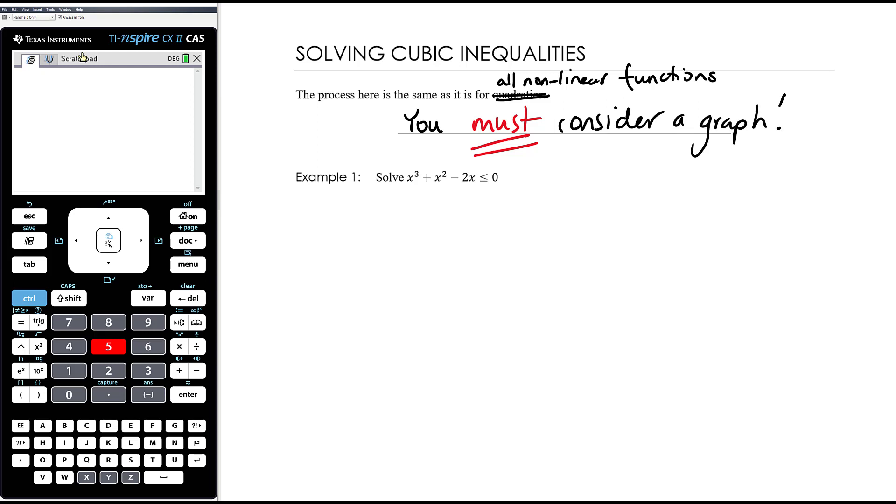It's the only way to do it. Draw the graph and then the answer is sitting right there in front of you. It doesn't matter how loud I say that, how big a font I use to write that, what color pen I use to write that in. In my experience, all students think they can solve non-linear inequalities just by shuffling around the algebra, but you cannot, and you must draw a graph. It's all you've got to do. Draw a graph.